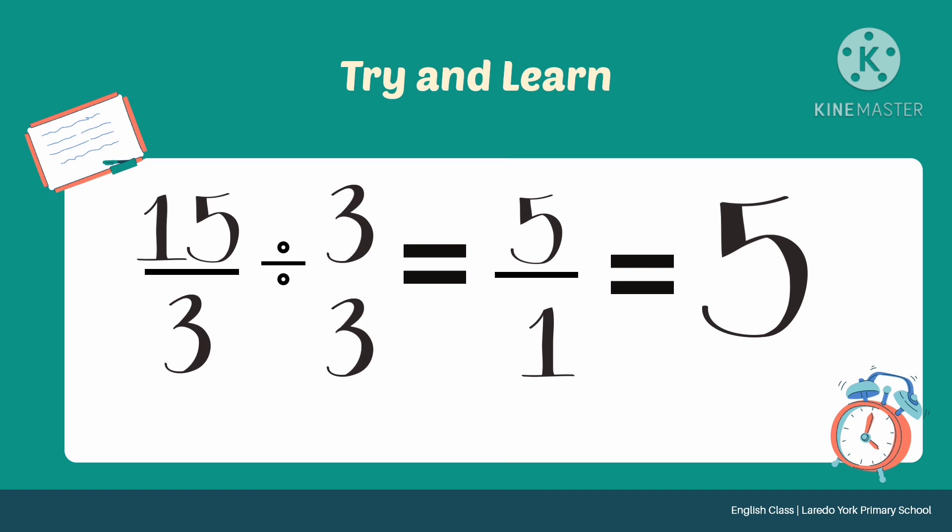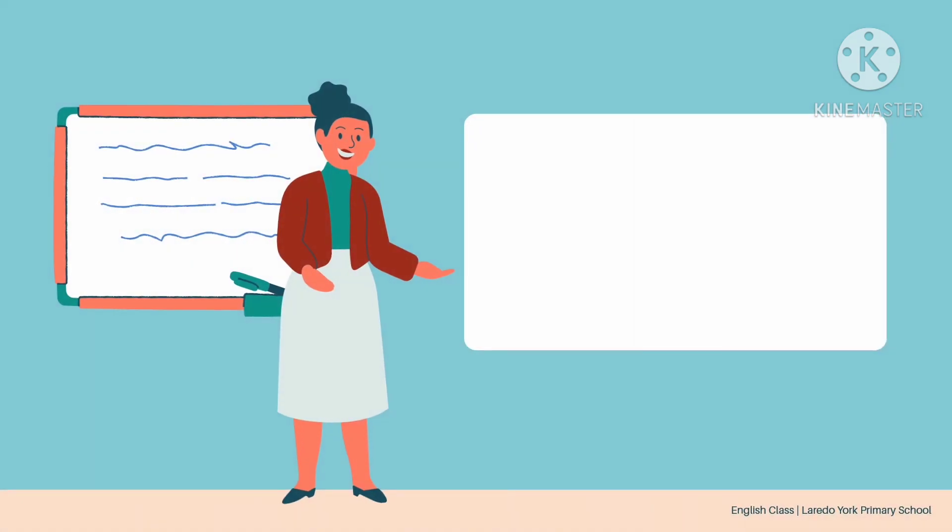Sa definition ng ating whole number kanina, a whole number are numbers that can also be expressed as fraction by using 1 as the denominator. Tanggalin mo lang itong 1 na denominator, ma-express na natin sya again as whole number. We're done with multiplying fraction by a whole number.